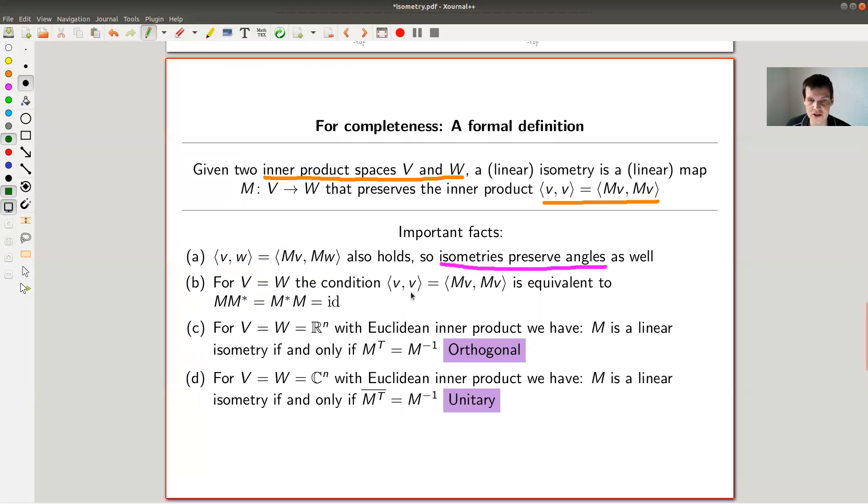And the condition is actually equivalent to the matrix being an orthogonal matrix, but orthogonal means depends on the context. As you can see in C and D. So in C, for example, if you're in real space, or in D, if you're in complex space, the two conditions boil down to what is called orthogonal or unitary.